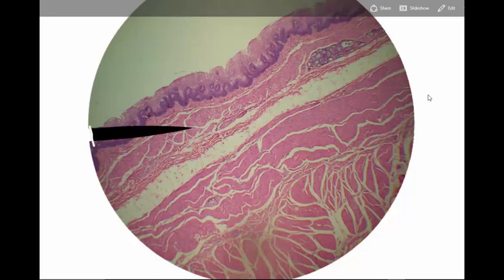For this slide, questions that I might ask, what organ does this section come from? And the answer to that question is, this is esophagus. How about, let's name the layer at the pointer. And the layer at the pointer, we're referring to the layer of the alimentary canal and that pointer happens to be in the submucosa.